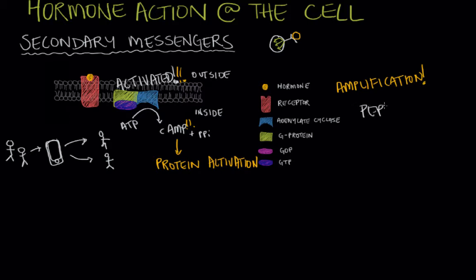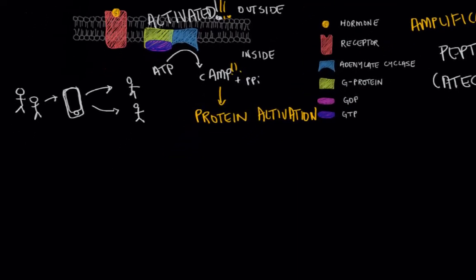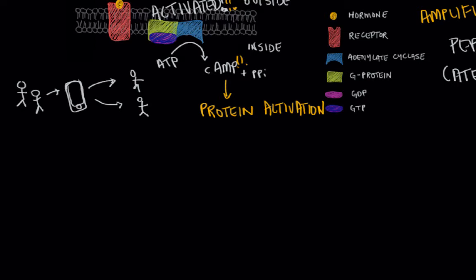Peptide hormones and catecholamines, both of which can't cross the cell membrane, use secondary messengers to communicate. And then the other major method of hormone action on a cell is as a primary messenger.